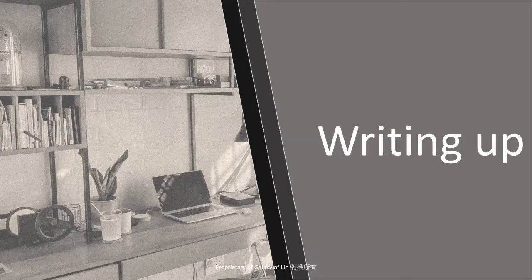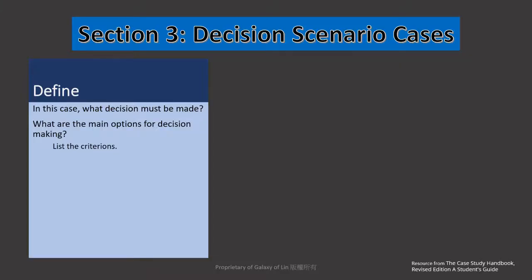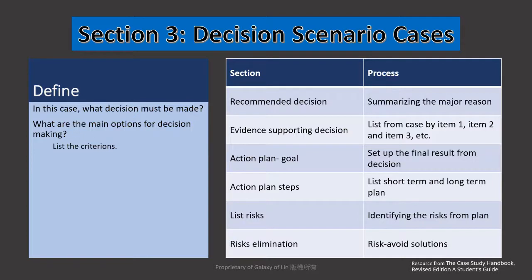Now we move to part 2 — writing up. You need to define what is the decision factor for this case and what are the main options for decision making. You need to compare each of the decisions and choose the most optimal one. First, choose one of the recommended decisions, then summarize the major reasons why you want to choose this decision. Each of the reasons must have some clue or evidence to support your choice.